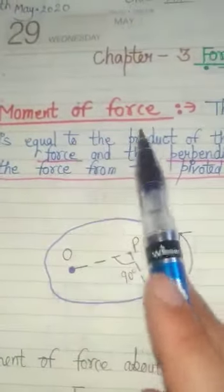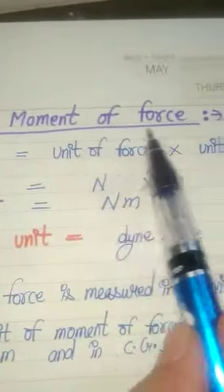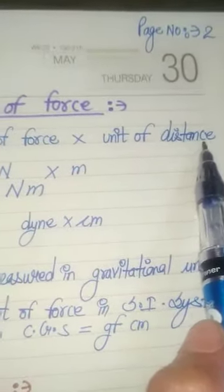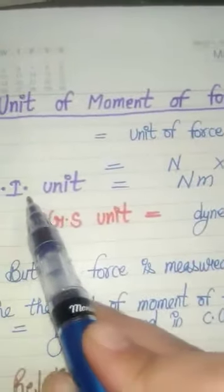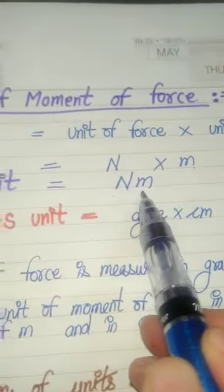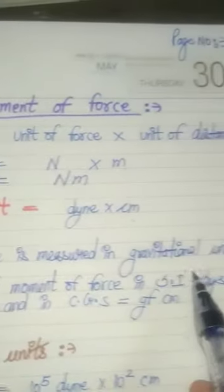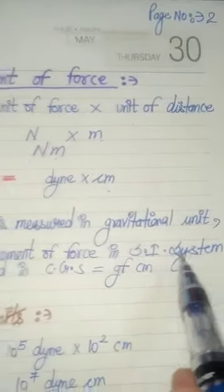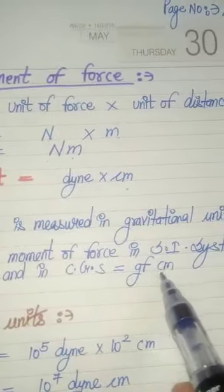The moment of force is the product of the force and the perpendicular distance of the force. Now, the unit of moment of force equals the unit of force multiplied by the unit of distance. The SI unit of force is Newton and the SI unit of distance is meter. So the SI unit of moment of force is Newton meter, and its CGS unit is dyne centimeter. If the force is measured in gravitational units, then the SI unit of moment of force is kilogram-force meter and in CGS it is gram-force centimeter.